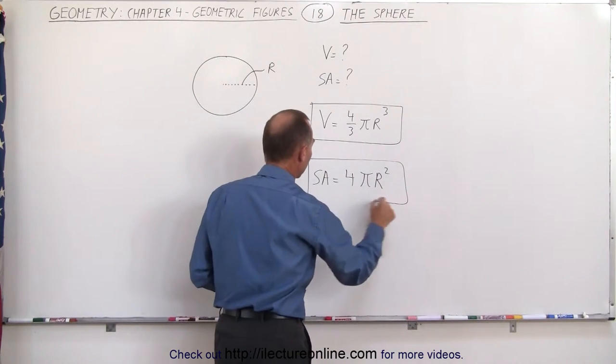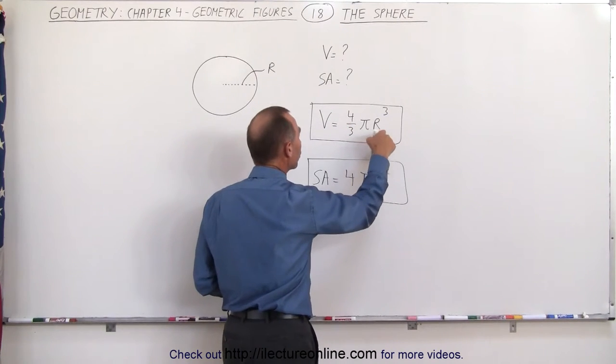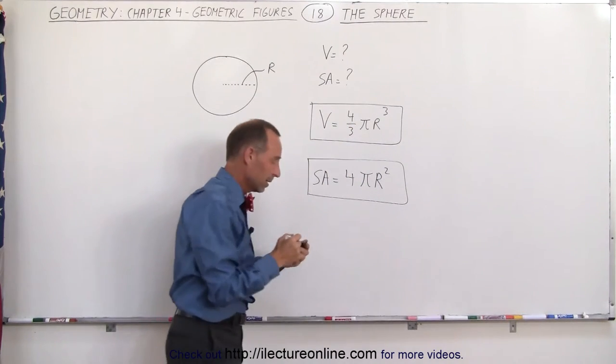4 pi r squared is the surface area of a sphere, and four-thirds pi r cubed is the volume of a sphere.